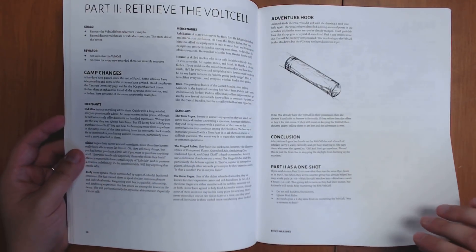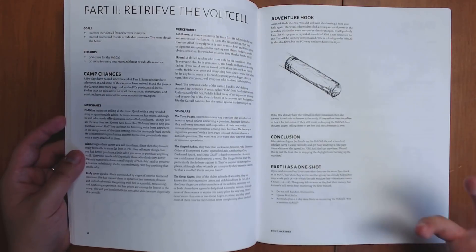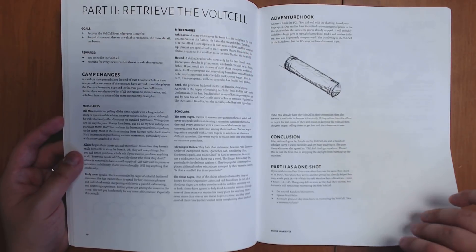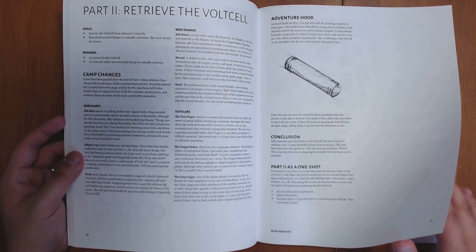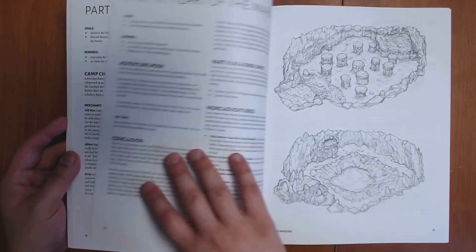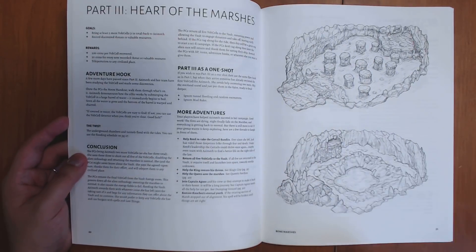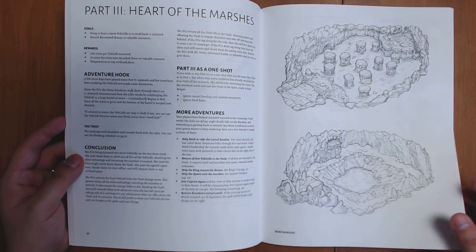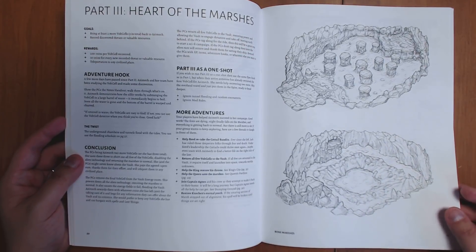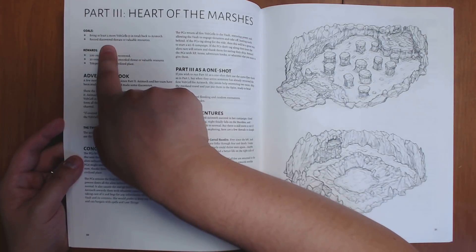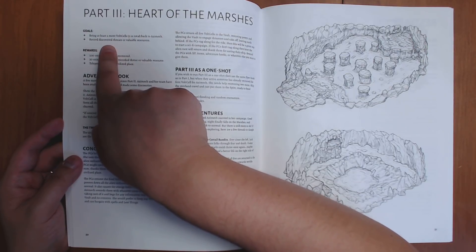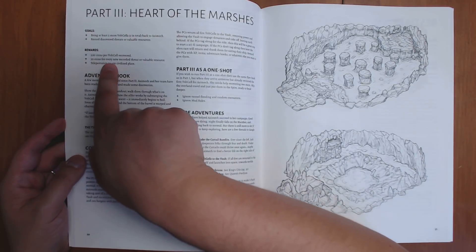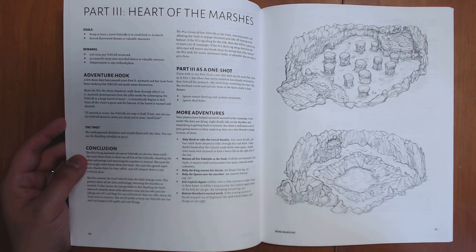We have a second mission here, retrieve the volt cell, which are these batteries that can be found around the setting, hidden in the muck or underneath objects, and you can affect the setting pretty dramatically by removing them or maybe using them to your own advantage. We have this section, the heart of the marshes, where a new goal is to bring at least two more volt cells, three in total, back to Azamek, record discovered threats and valuable resources, and you get rewards for doing these things, especially money.